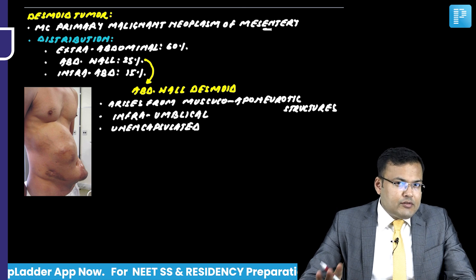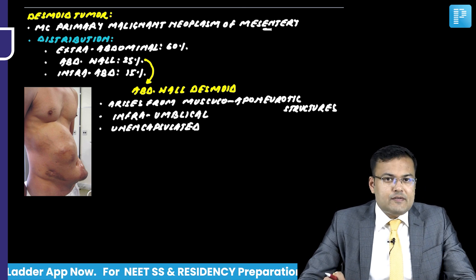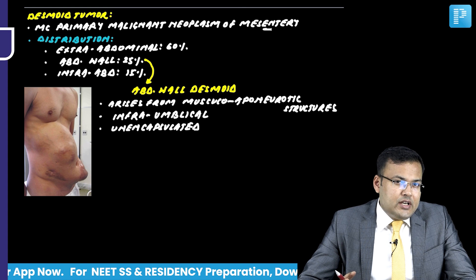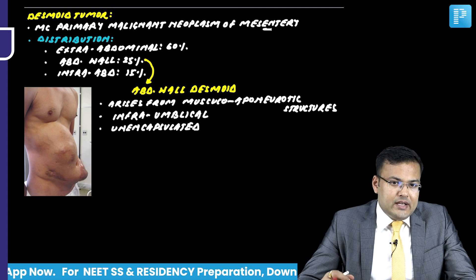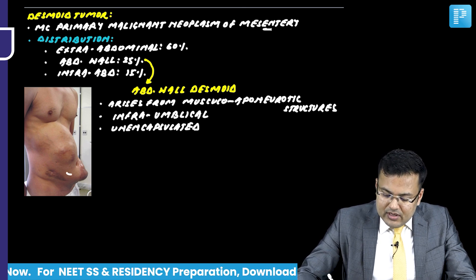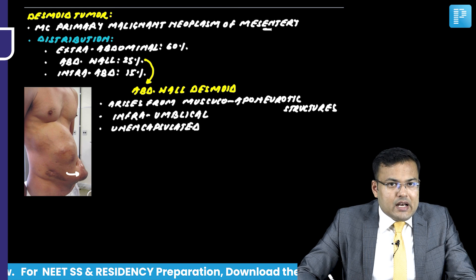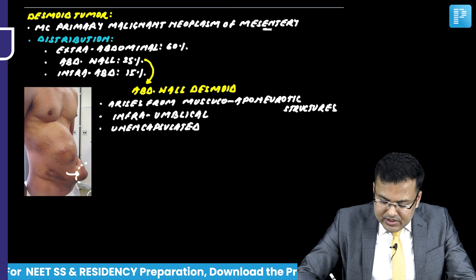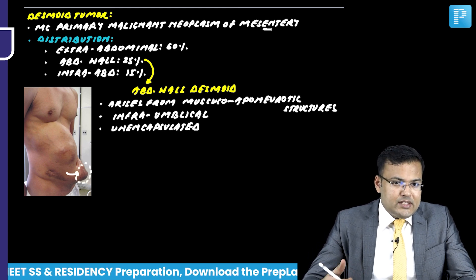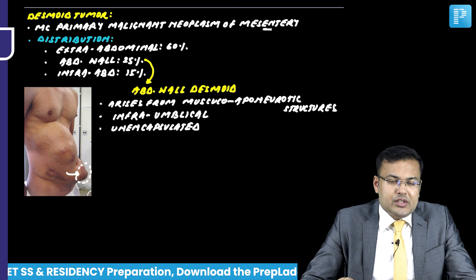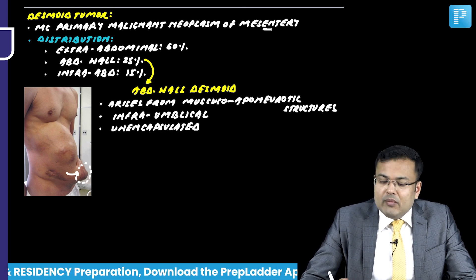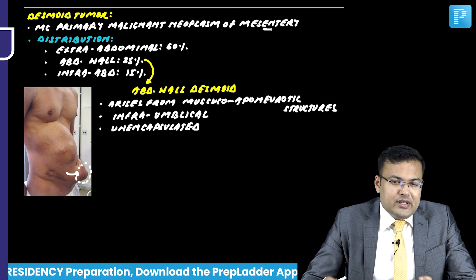One of the most important risk factors is previous surgery or history of trauma — surgical incision or any kind of surgical trauma. In this image, you can see a patient who underwent surgery and subsequently developed abdominal wall desmoid. The most common presentation is a mass.